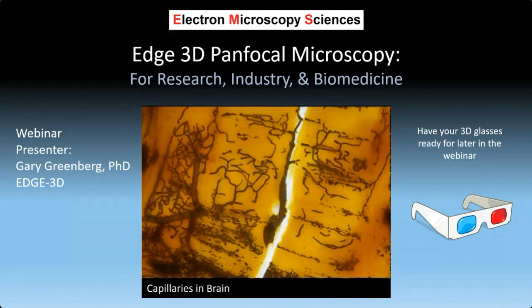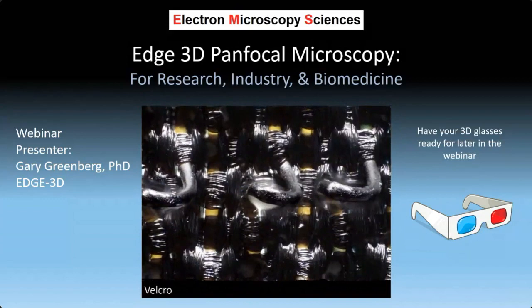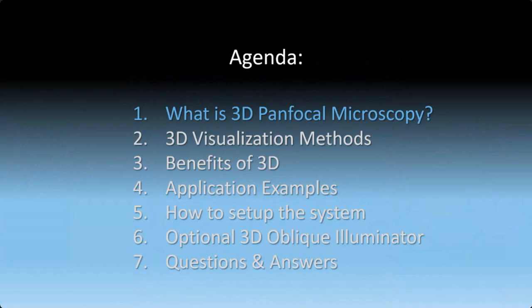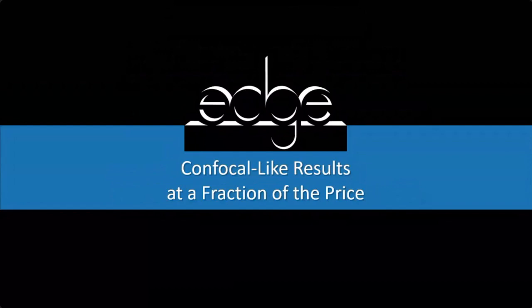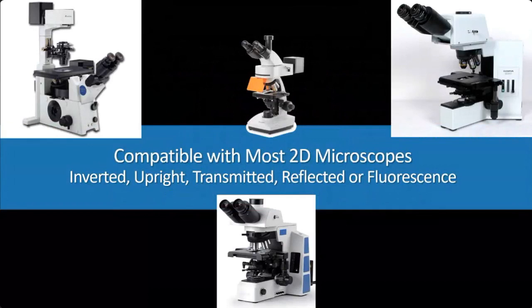Let's begin the webinar on EDGE 3D Panfocal Microscopy. What is 3D Panfocal Microscopy? Basically, it is a plug-and-play accessory that converts your 2D microscope into 3D. It gives you confocal-like results at a fraction of the price. It's compatible with almost all 2D microscopes, whether it's inverted, fluorescence, reflected, or transmitted, and it works with systems such as phase contrast.